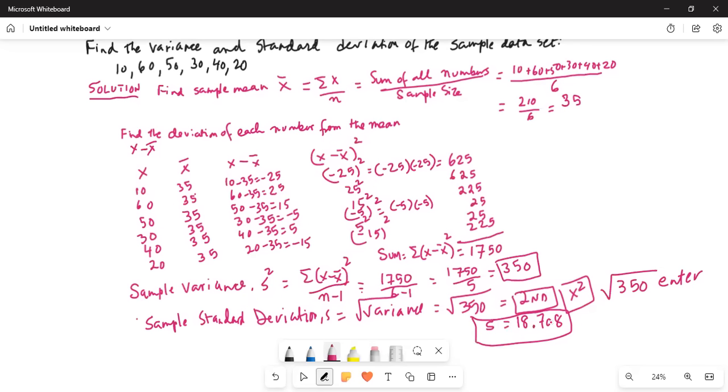In L1, we will enter the numbers: 10, 60, 50, 30, 40, and 20. Okay. Now we will press the stat button. Calc. We will highlight calc by moving the cursor on top of calc, and then press number 1. 1 var stats. List is L1. Calculate.